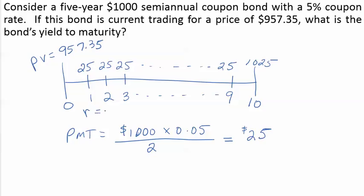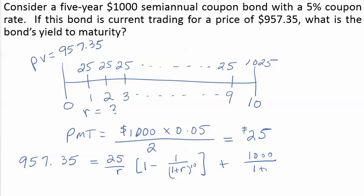To find the yield to maturity, we need to find the 6-month discount rate and then annualize it. Conceptually, the discount rate will solve this equation: it's the rate such that the present value of this $25 annuity for 10 periods plus the present value of the face value will sum to $957.35.